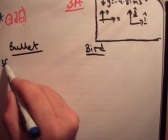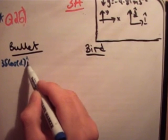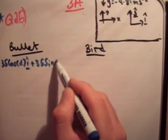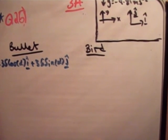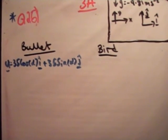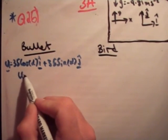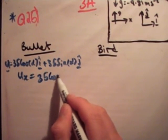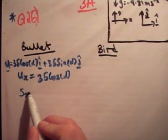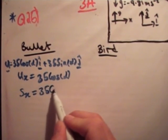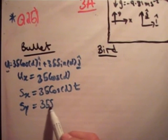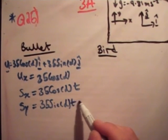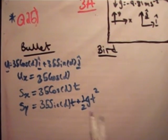If we resolve the vectors as we've done many times, we're going to get the following for the bullet: 35 cos alpha i plus 35 sin alpha j. Therefore u sub x is equal to 35 cos alpha, and s sub x is equal to ut plus a half at squared, which gives us 35 cos alpha t. And s sub y is going to be equal to 35 sin alpha t plus half g t squared.